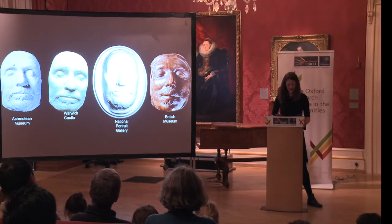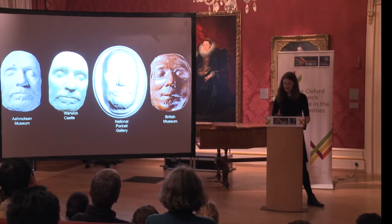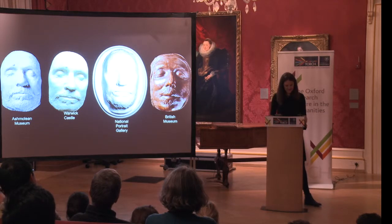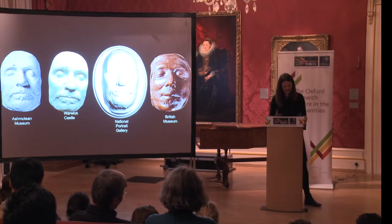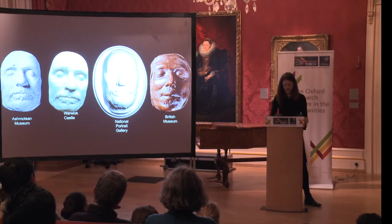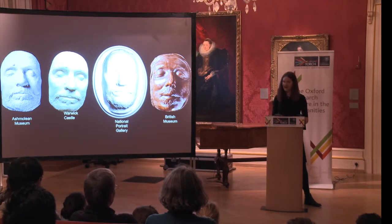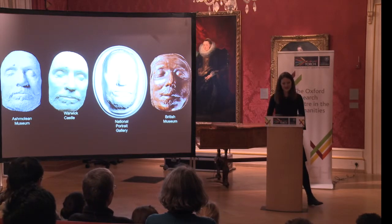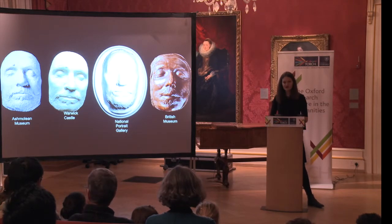The Ashmolean version was cast at some point during the 1800s from the mask at Warwick Castle. The afterlife of Cromwell's death mask and its various copies is complex and mysterious, but as an object it's certainly not unique — it's an example of a practice that extends far back into the ancient world and speaks of the long-standing desire to hold on to the image of a person after they've died.